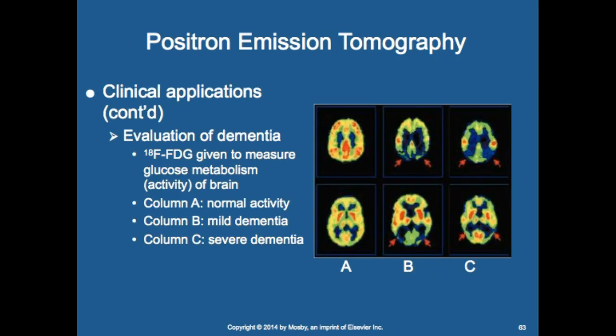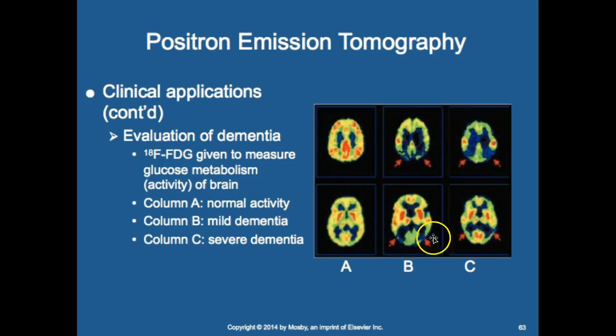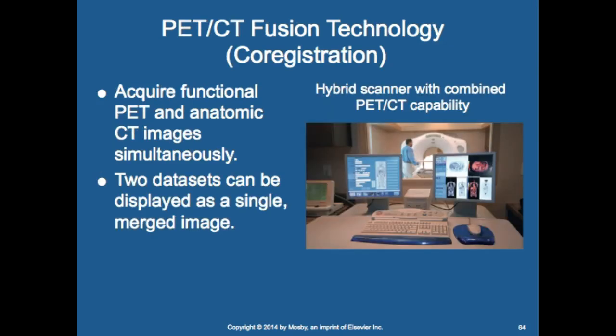For dementia evaluation, FDG measures glucose in the brain. Image A is normal, B is mild dementia, and C is severe dementia, allowing us to assess the extent of dementia within the brain.